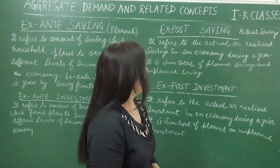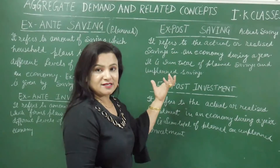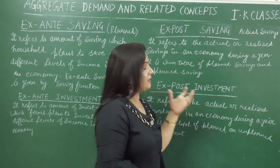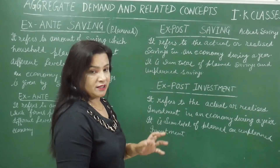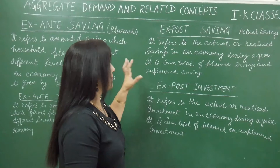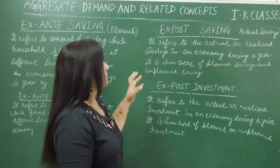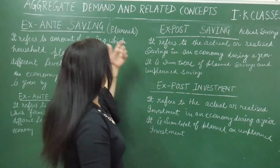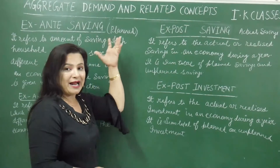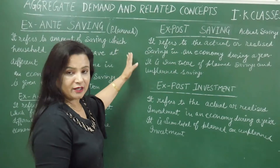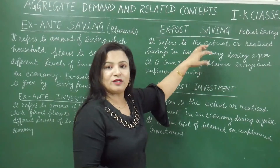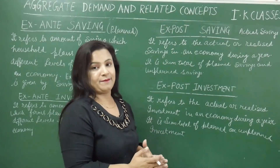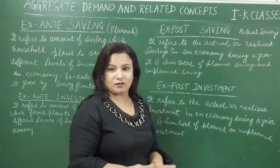Ex-post savings means actual or realized savings. It refers to the actual or realized savings in an economy during a year. It is the sum total of planned savings and unplanned savings. For example, if planned savings at 100 crore income level was 30 crores but actual savings turned out to be 40 crores, then actual includes both planned and unplanned savings combined.